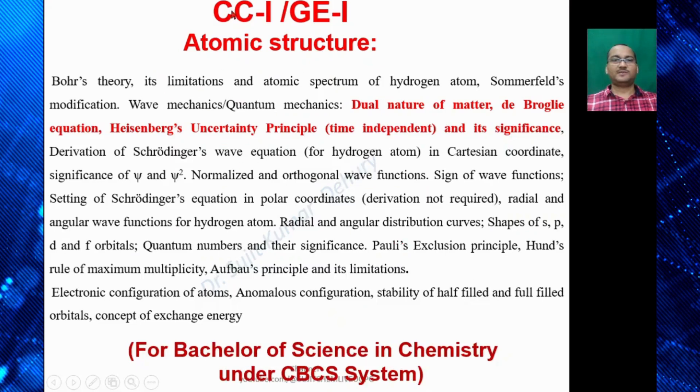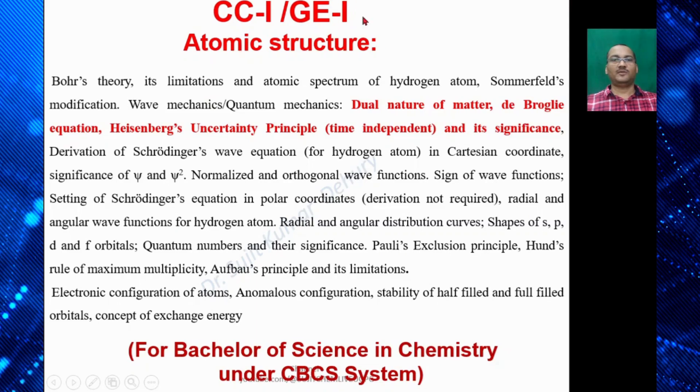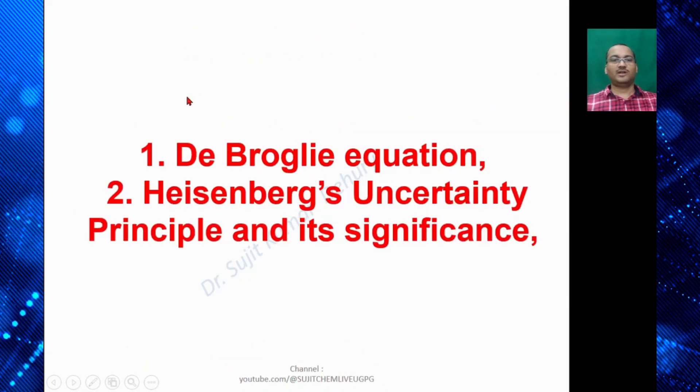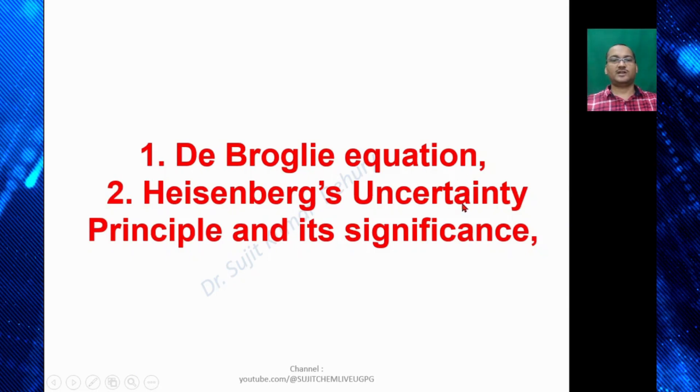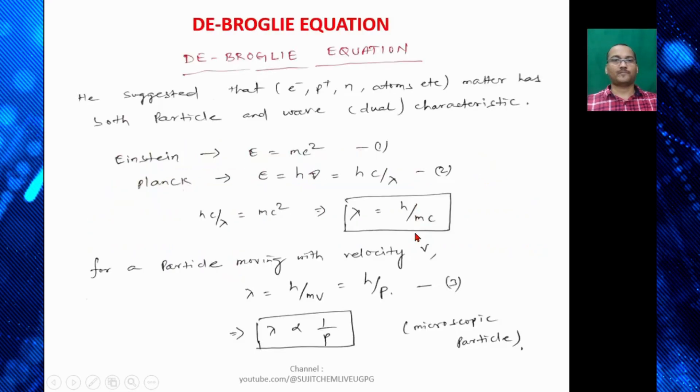So this is the syllabus for CC1 Paper for BSc Honor students and GU1 Paper for generic students. Today we are going to talk about de Broglie equation and Heisenberg's uncertainty principle and its significance. So first let's discuss de Broglie equation.